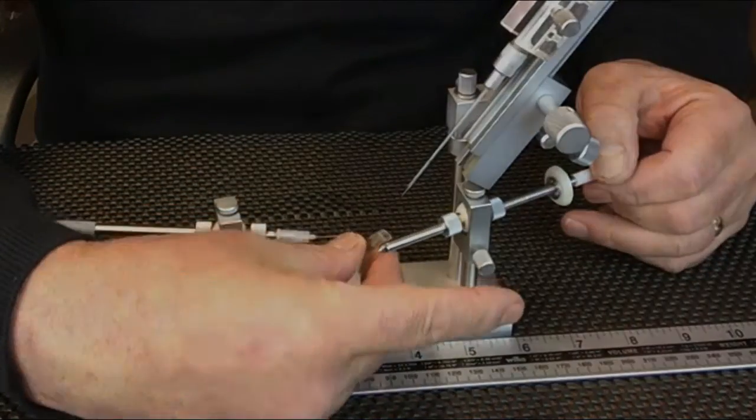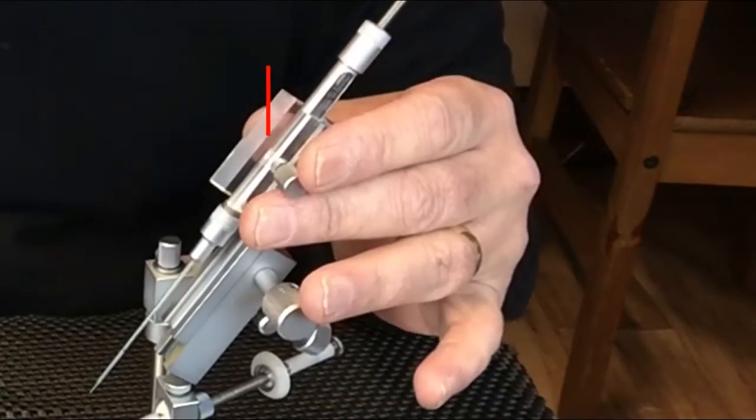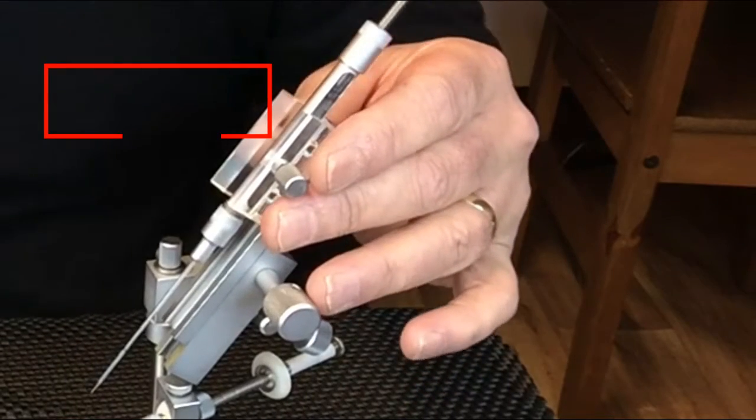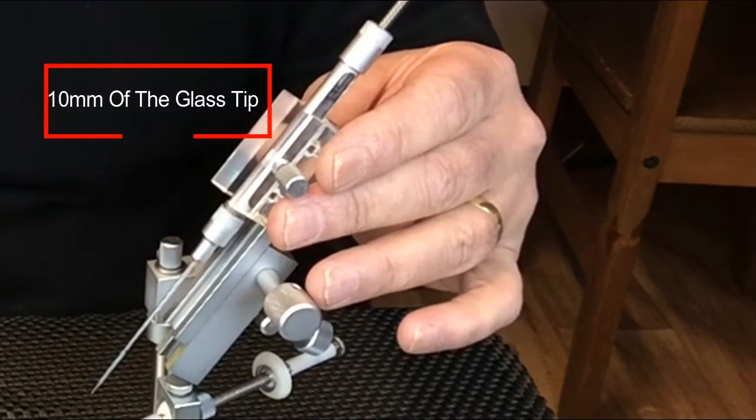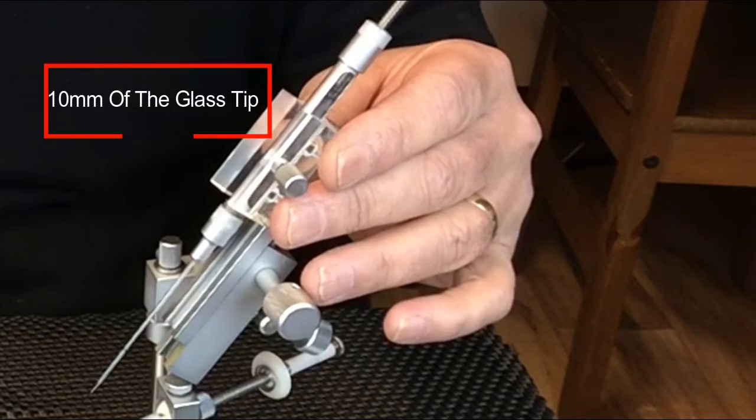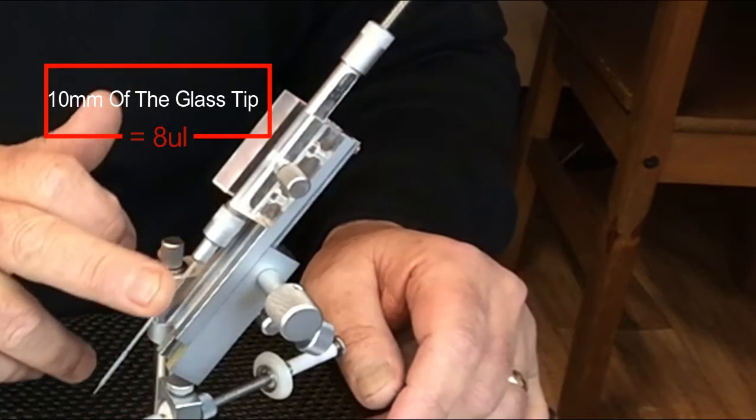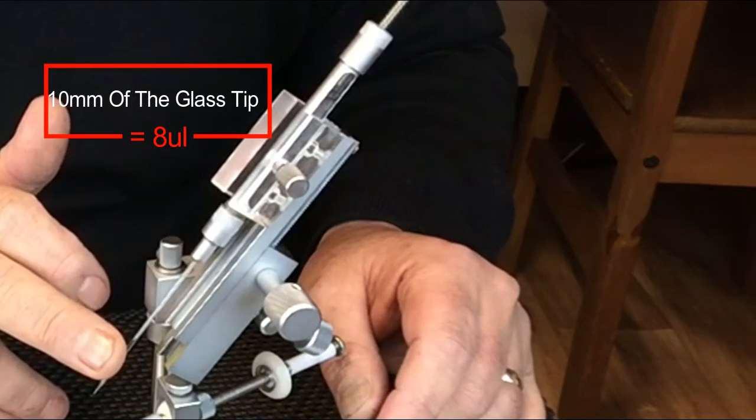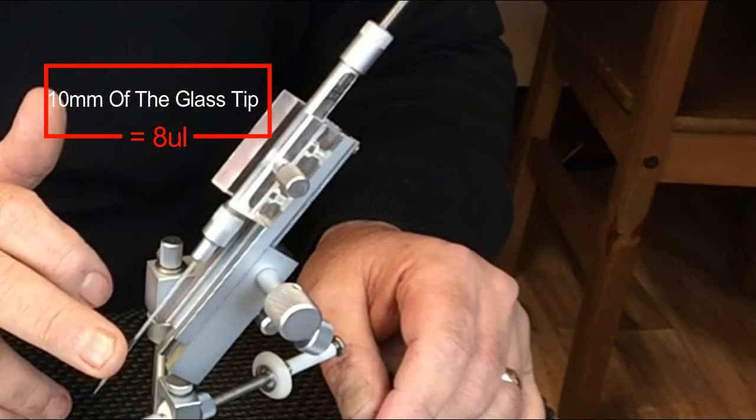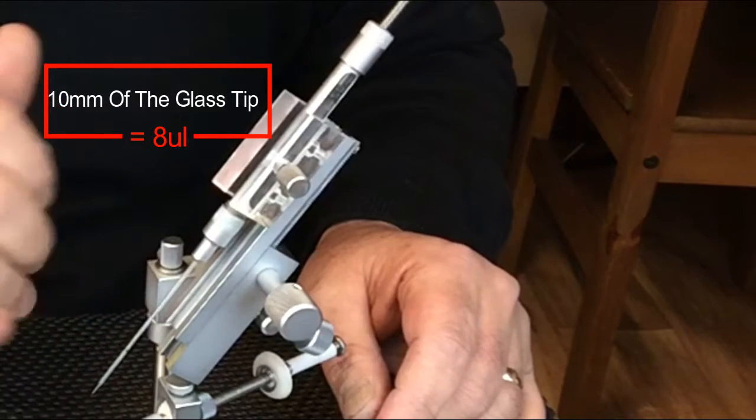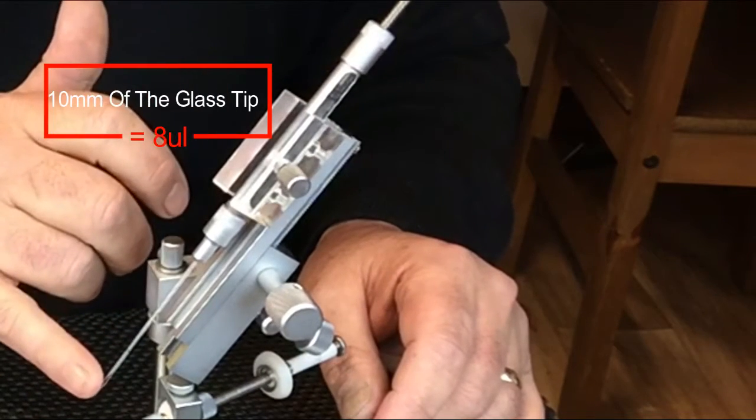This is a removable queen holder. The Schley standard syringe holds up to five sperm portions, each portion is eight microliters. In the glass tip this works out at 10 millimeters of the glass tip to each portion, or eight microliters of semen.